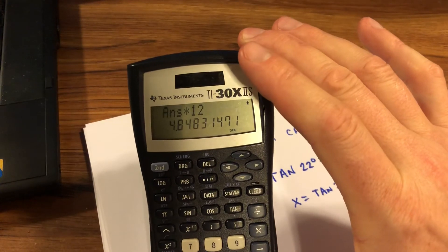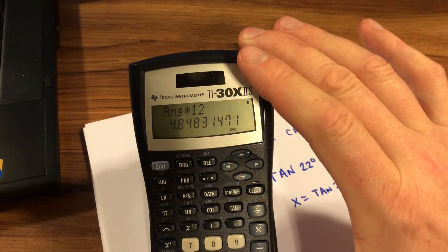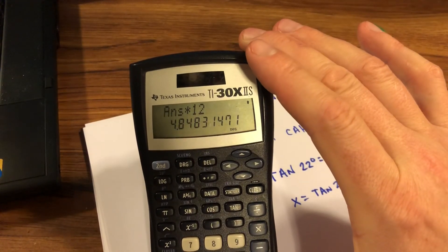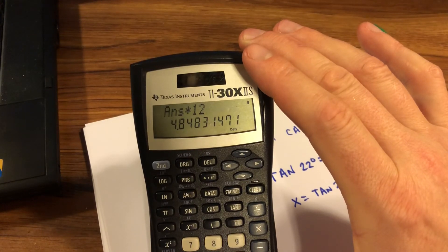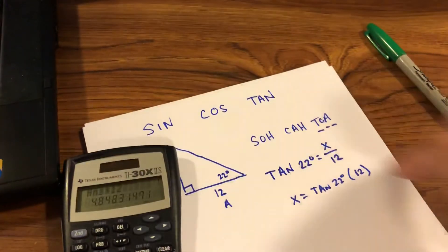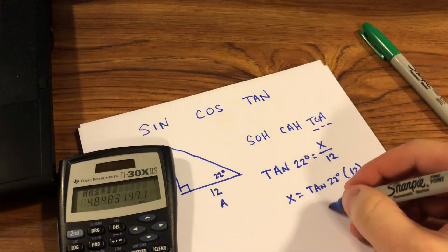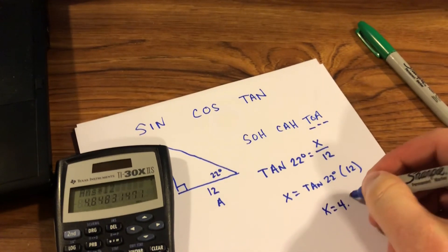When I multiply that times 12, that gives me a length of 4.84 approximately. So I could say my answer for this one: x is equal to 4.84.